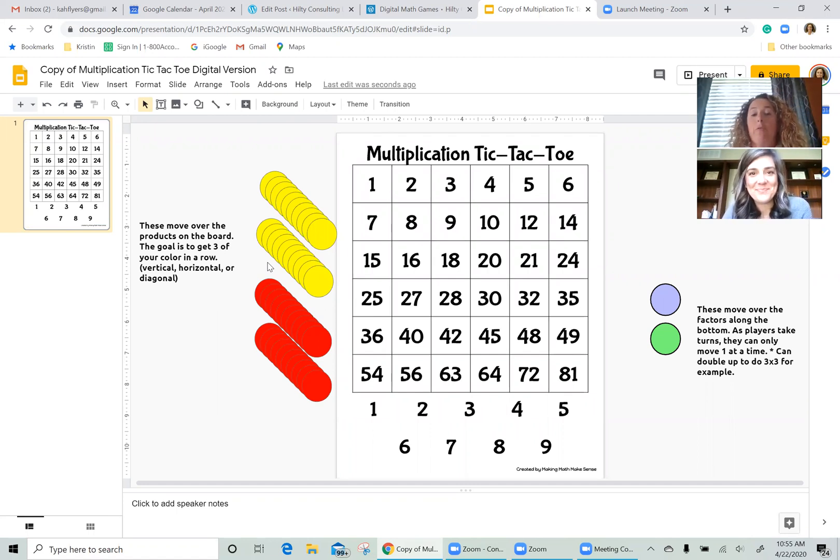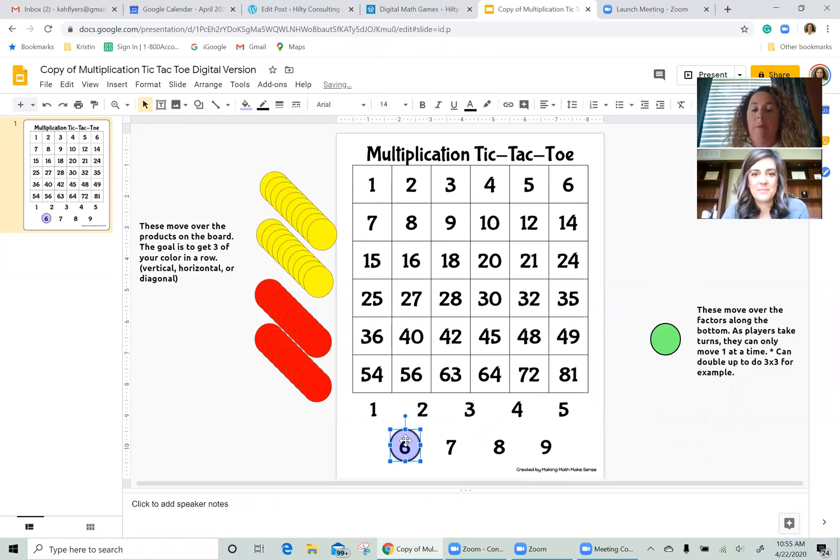All right, so for multiplication tic-tac-toe, you will see over here on the left-hand side we have our player counters yellow and red. I will be yellow. We'll have Emily be the red counters. Over here on the right-hand side, these are your game chips that you're going to be playing with. So these counters are actually opaque, meaning that you can see through them when you place them over top of these numbers down here at the bottom.